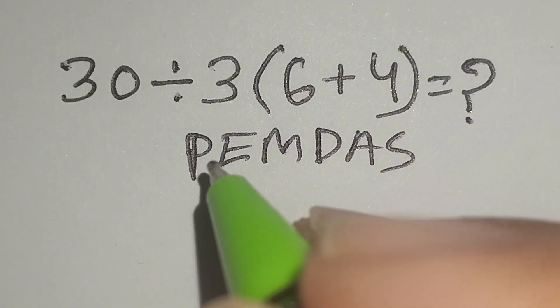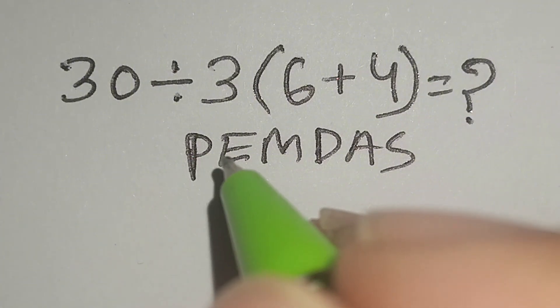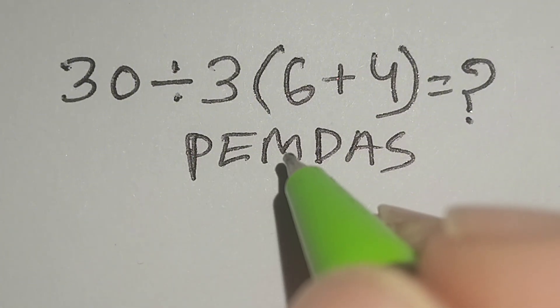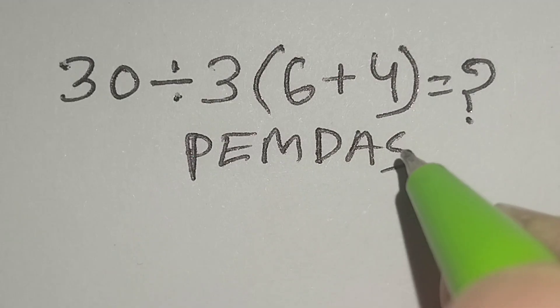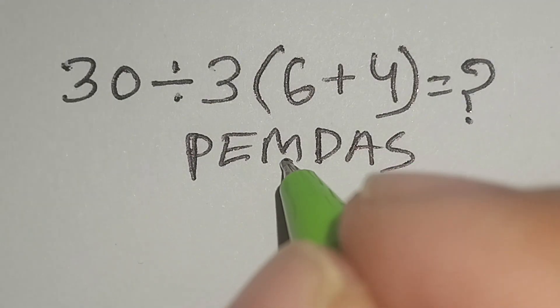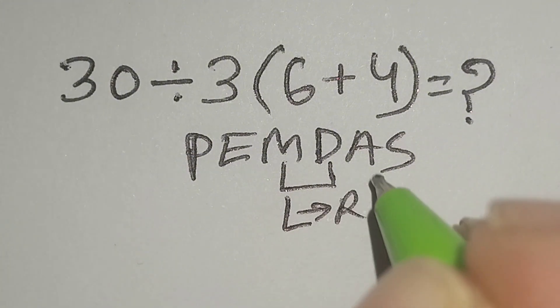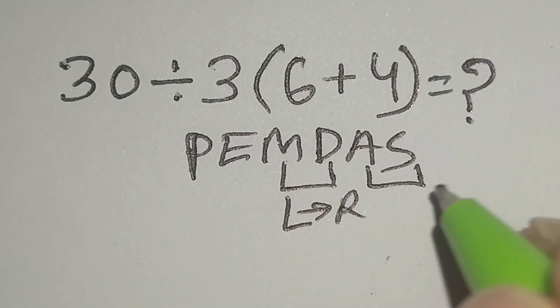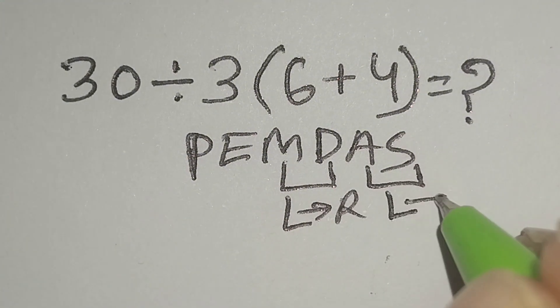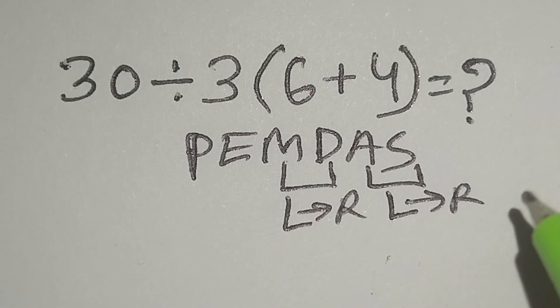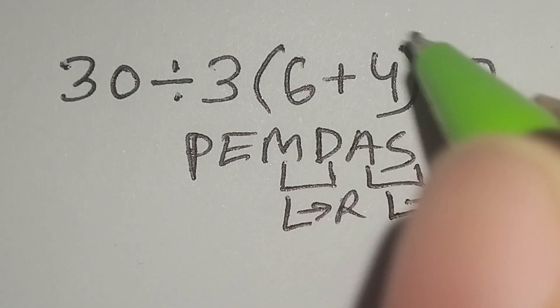According to the PEMDAS rule, first we work with parenthesis, then exponent, then multiplication or division, then addition or subtraction. Remember, multiplication and division have the same priority, so we work left to right. Addition and subtraction also have the same priority, so we work left to right. Therefore, first we work with this parenthesis.